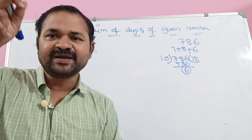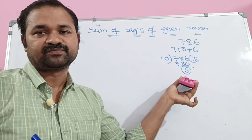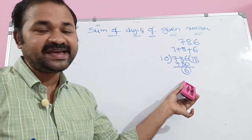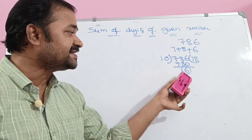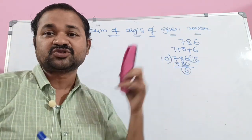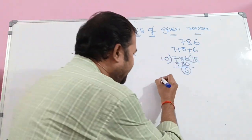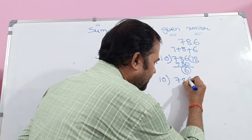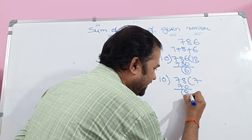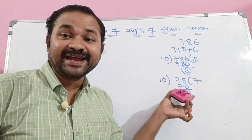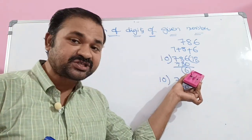In C language we have division and modulo operators. Modulo gives the remainder; division gives the quotient. We add 6 to sum. Then we perform the operation on 78. So 78 modulo 10 gives remainder 8. We add 8 to sum. Previously sum was 6, so 6 plus 8 gives 14.